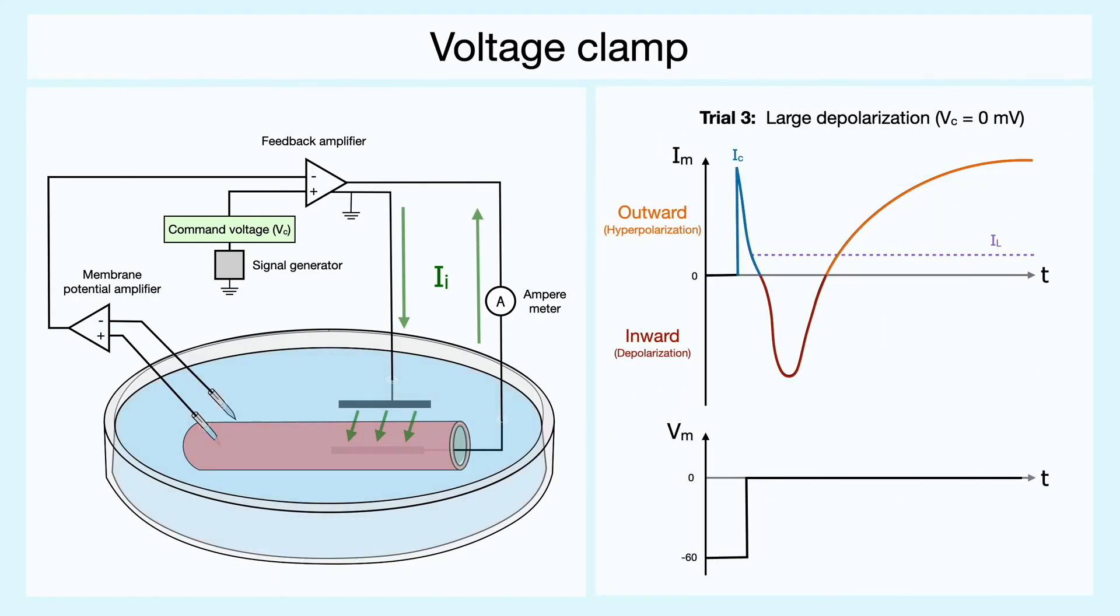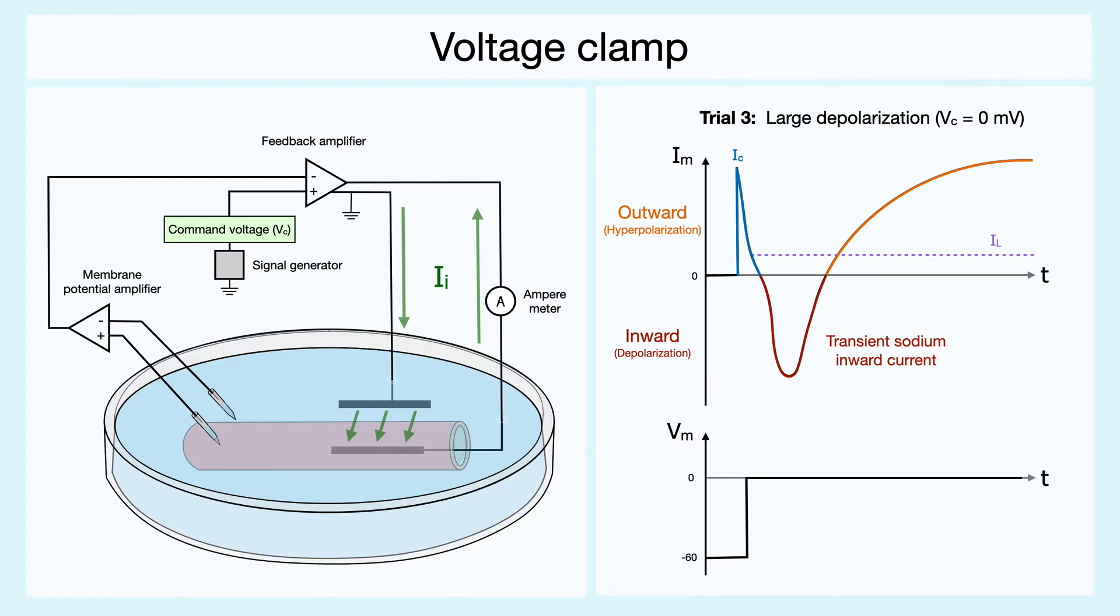Therefore, when we look back at the original recording, the first bit of current is the transient sodium inward current, which is followed by a delayed outward potassium current.